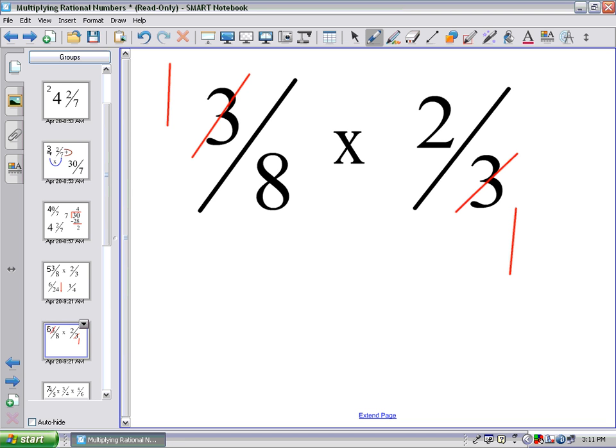I can also find a common factor that goes into 2 and 8, which is 2, divide 2 by 2, which makes a 1, and then divide 8 by 2. And what that is going to give me is 4. Now, my fractions aren't 3 over 8 and 2 over 3, it's 1 over 4 and 1 over 1. And when I multiply those guys together, again, I get the same answer I just got before. And that comes out to be 1 over 4.